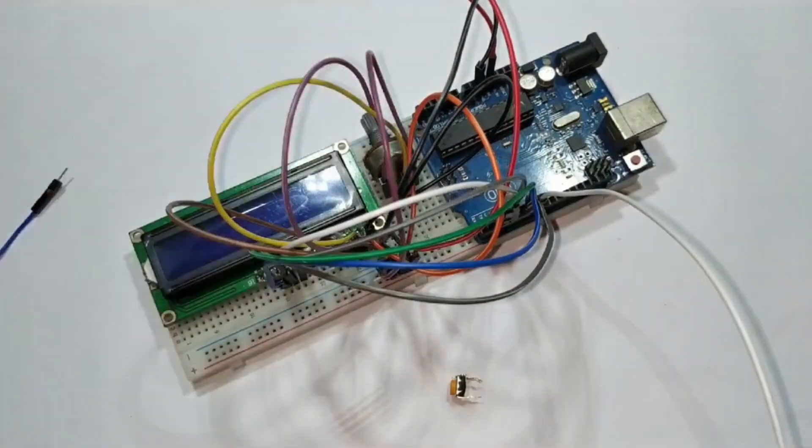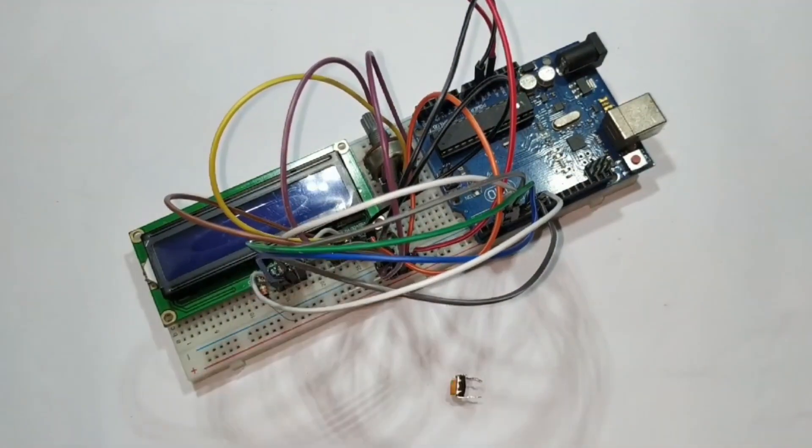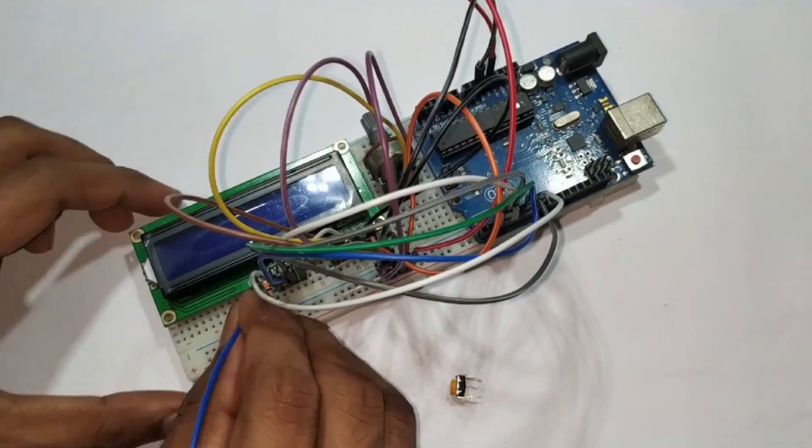At last, LCD anode pin is connected to the 5-volt through a 330 ohm resistor and cathode pin is connected to the ground.